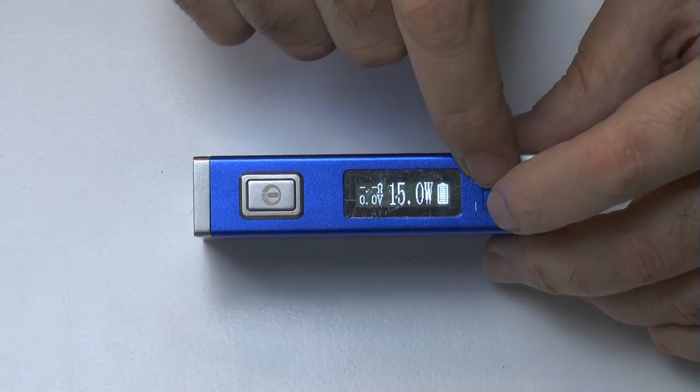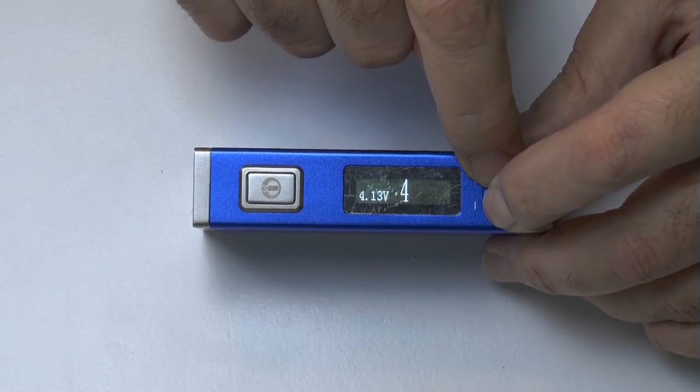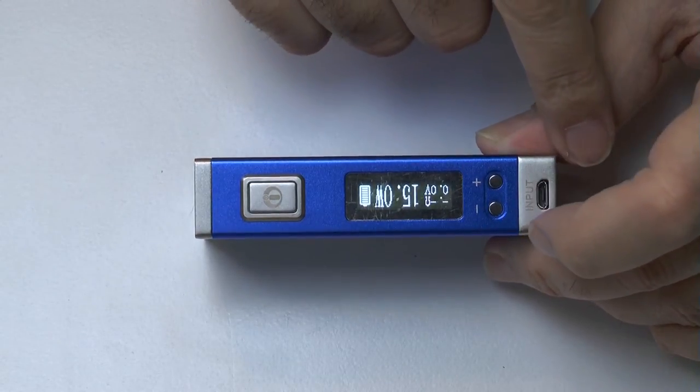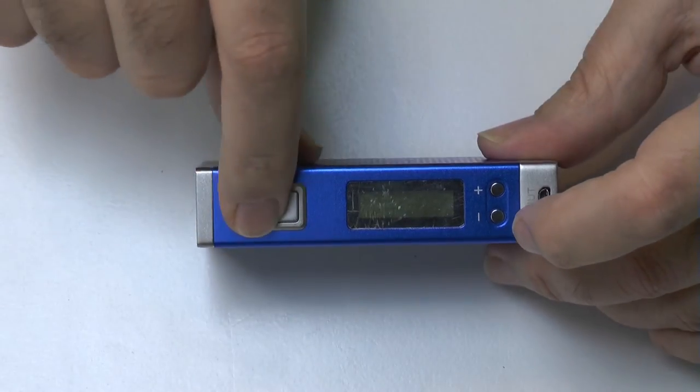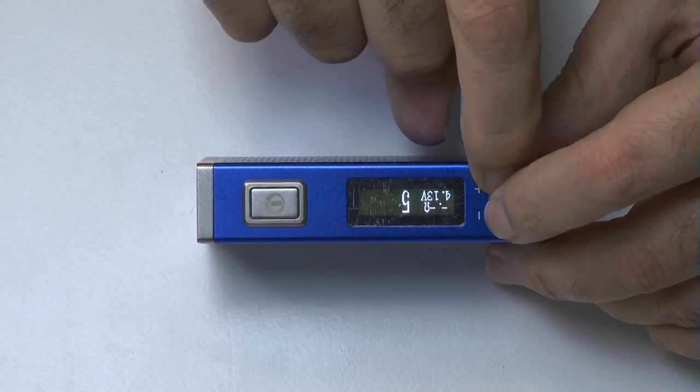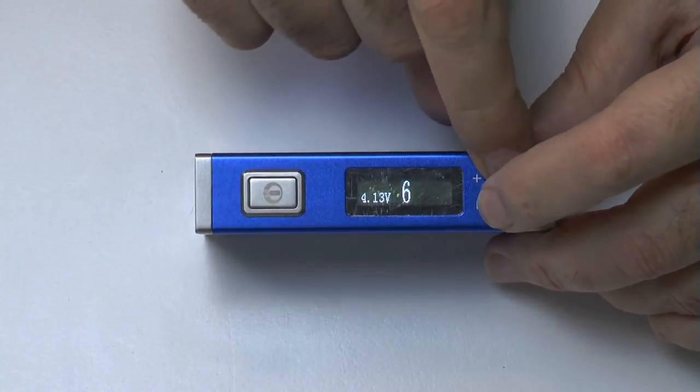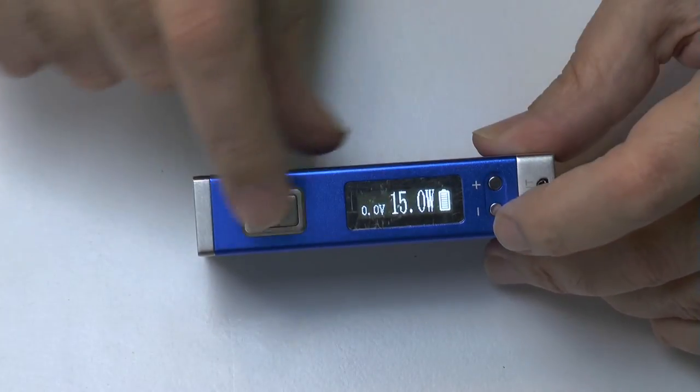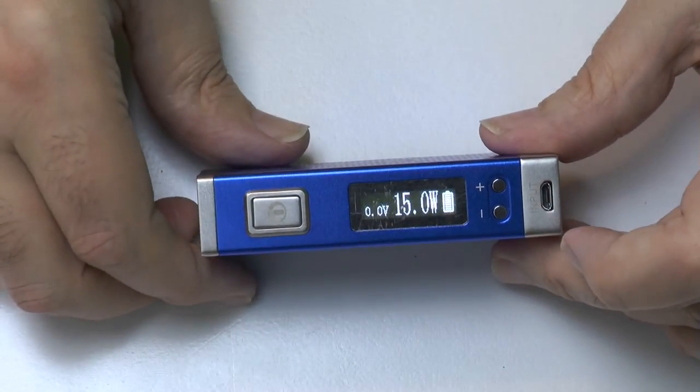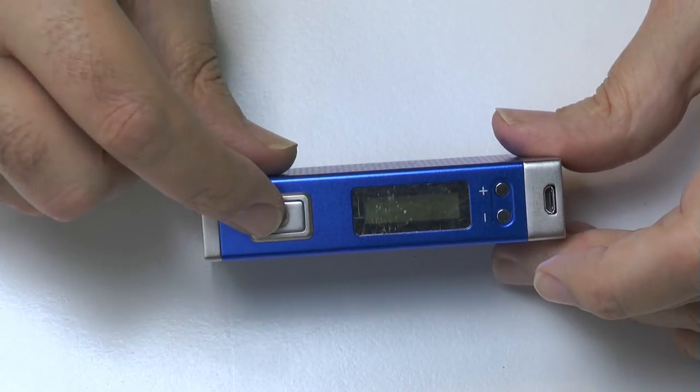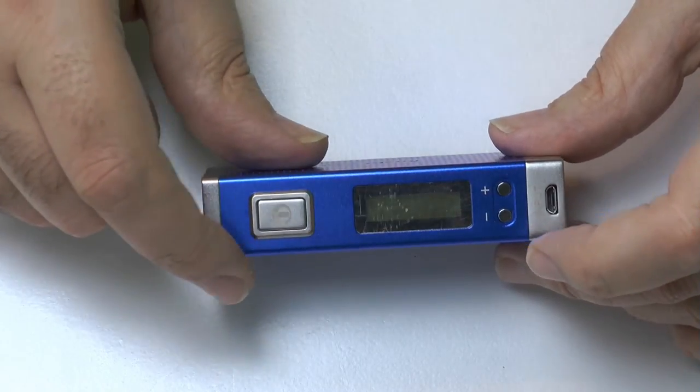If you hold down the plus and minus for about four seconds, it changes the display. So if you're a lefty or a righty you can have the display the other way round. It does actually as well consider every single push of the fire button to be a puff. So it's not a strict puff counter, it's more like a how many times the fire button was depressed counter. But having said that it works extremely well.